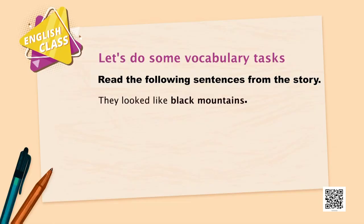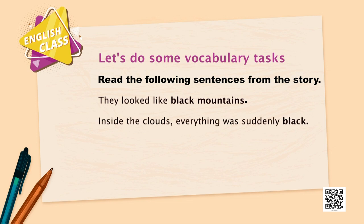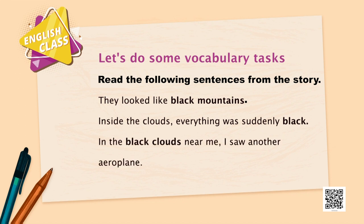Read the following sentences from the story. First: 'They look like black mountains.' Second: 'Inside the clouds, everything was suddenly black.' Third: 'In the black clouds near me, I saw another aeroplane.' Look at the words underlined and in bold — black mountains, black, black clouds, everything suddenly black. What does 'black' signify here?